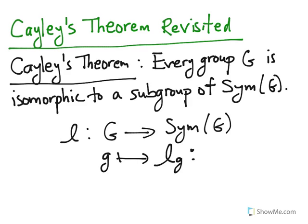So L_g is a map from G to G. It's supposed to be a bijection, and it sends an element x in G to g times x. It just multiplies elements in G on the left with little g.